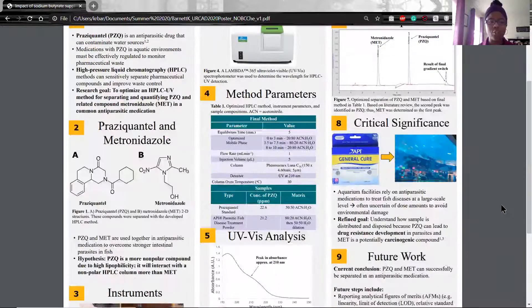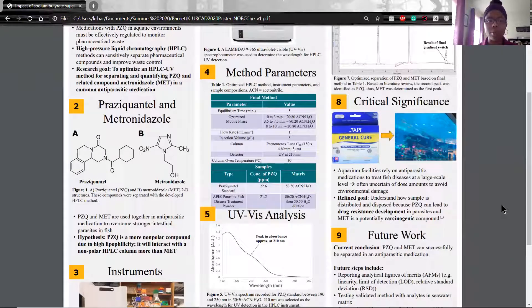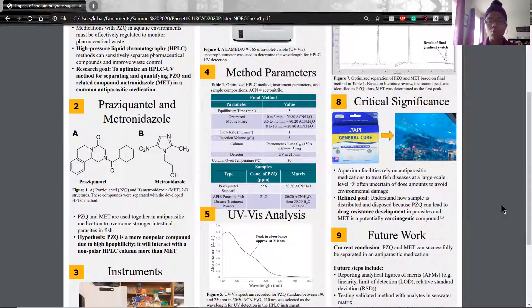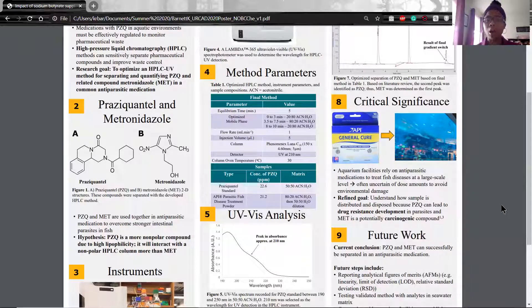On the far left in section 2, we see the two compounds that were separated in the HPLC method. Because a non-polar column was used for the HPLC, and Praziquantel is the more non-polar compound in this case, we expected the PZQ to elute after the MET because it would adhere to the column more.